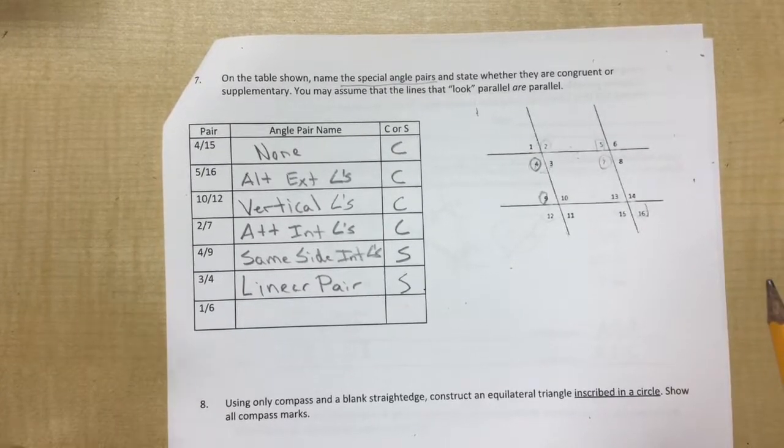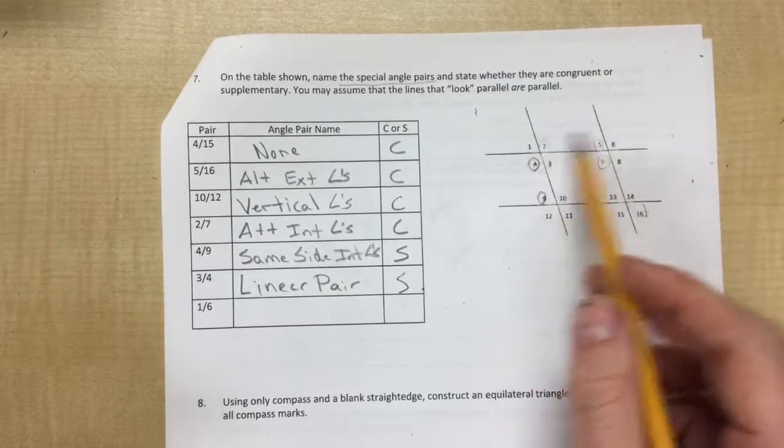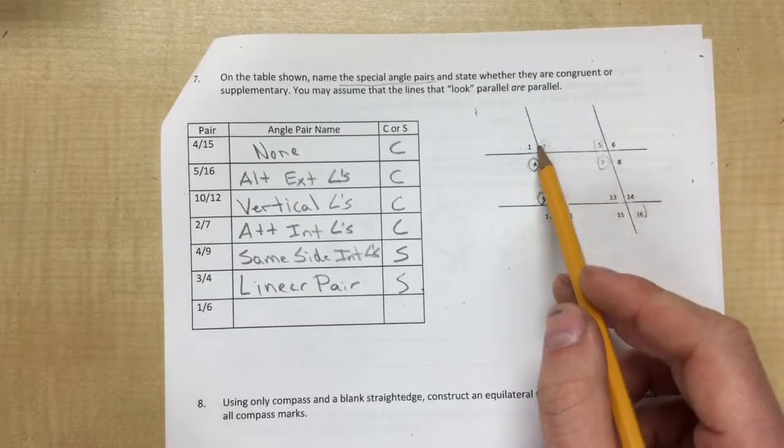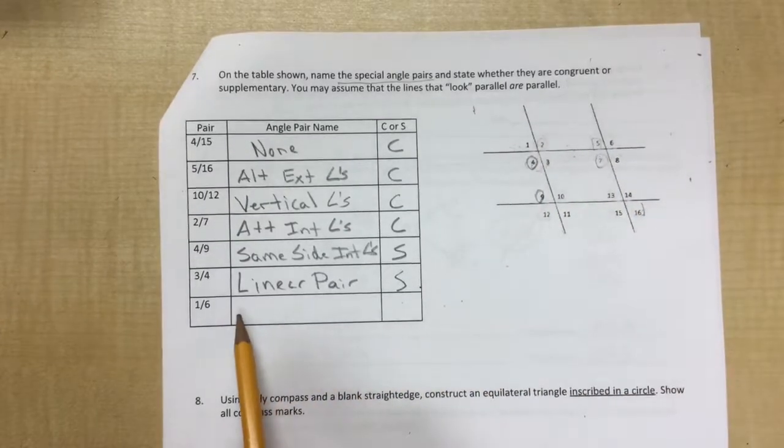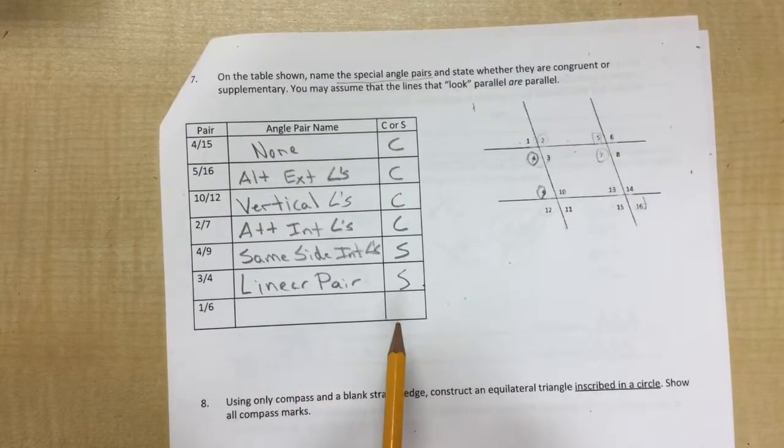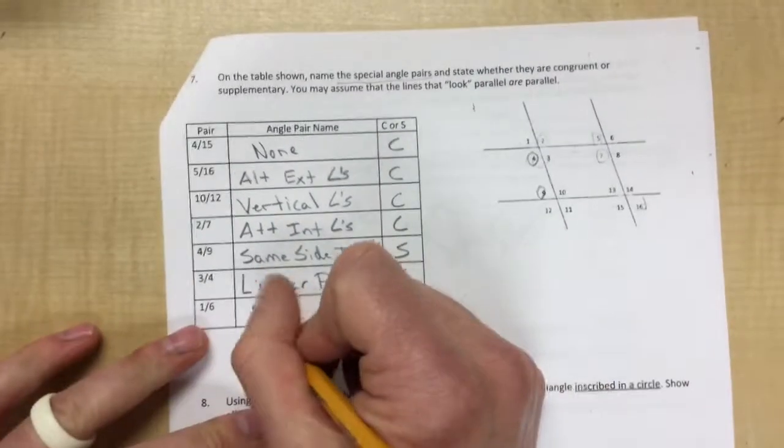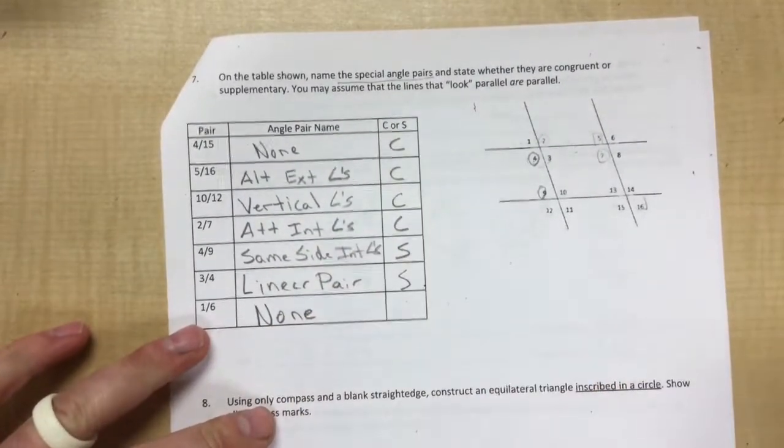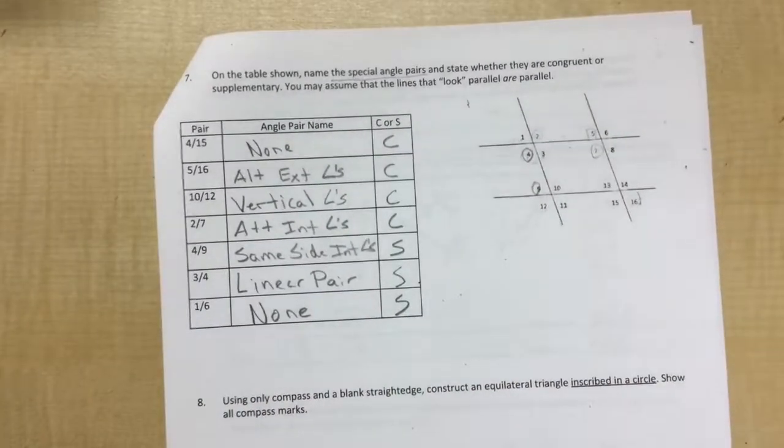One and six. One and six are on the exterior because they're not in between these parallel lines, and they're on the same side. So some people put same side exterior angles, which isn't really one of them, but I didn't count it wrong if you did. These are none and they look different. So they are supplementary. Okay. We got through that part.